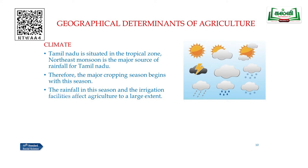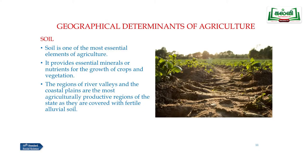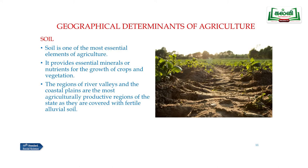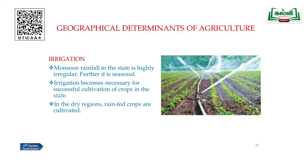The rainfall in the Northeast monsoon season and irrigation facilities affect agriculture to a large extent. Soil is one of the most essential elements of agriculture — it provides essential minerals and nutrients for the growth of crops and vegetation. The regions of river valleys and coastal plains are the most agriculturally productive regions, covered with fertile alluvial soil.